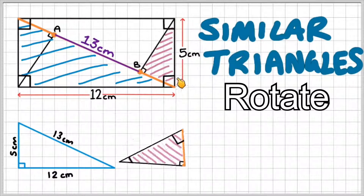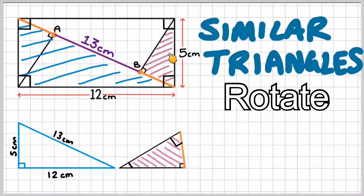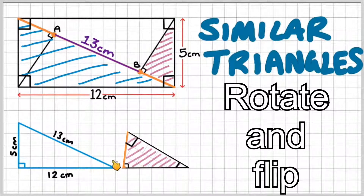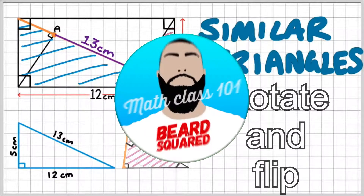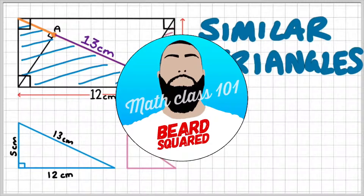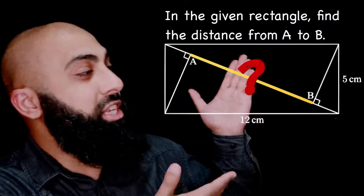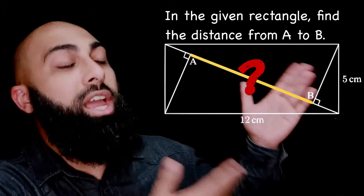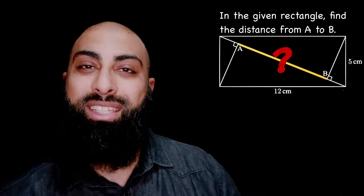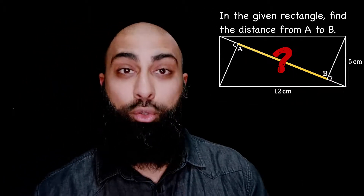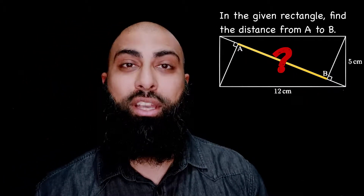If I rotate this small triangle in the same orientation as the blue one, I'm going to have the following. Hey, welcome back to Bear Squid. In this video, we're going to be solving this hard question here using simple middle school mathematics.